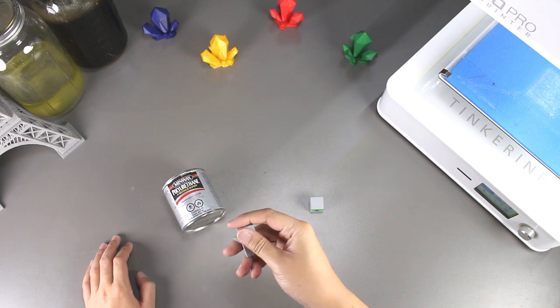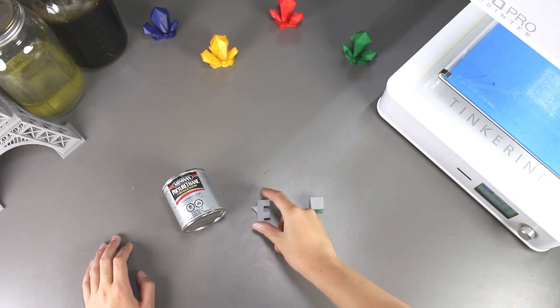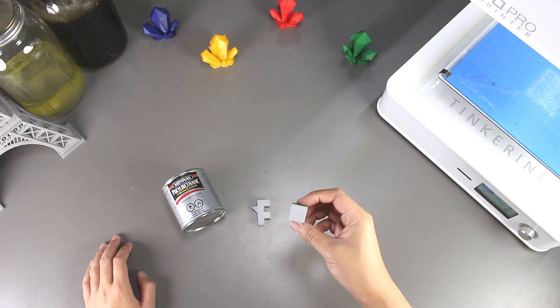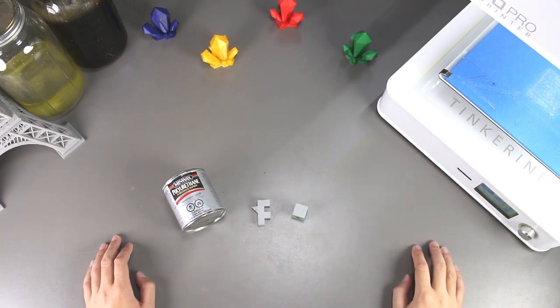But I would say the cube model definitely had an advantage over the F model as it does look smoother and is smoother to the touch. Overall, I think given a bit of work, polyurethane does work pretty well.